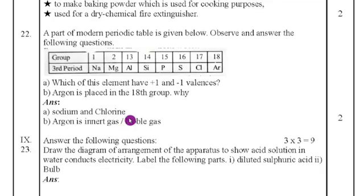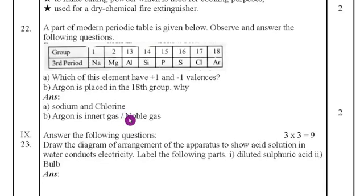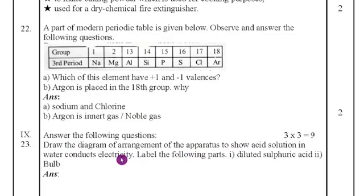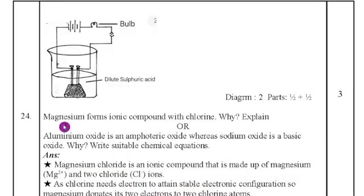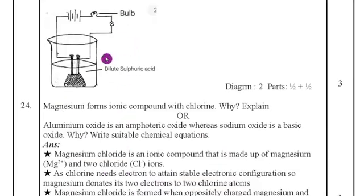Ninth main: answer the following questions — three questions. Twenty-third question: draw the diagram of the arrangement of apparatus to show that an acid solution in water conducts electricity. The diagram is provided here — you just need to practice drawing it.